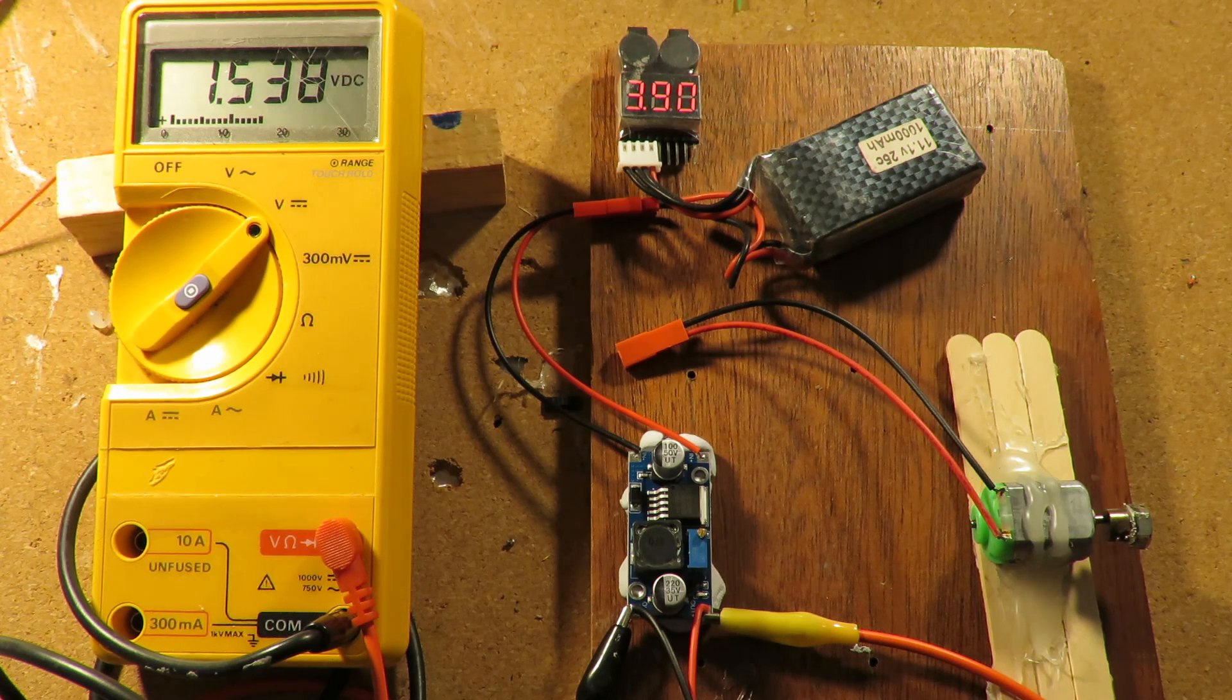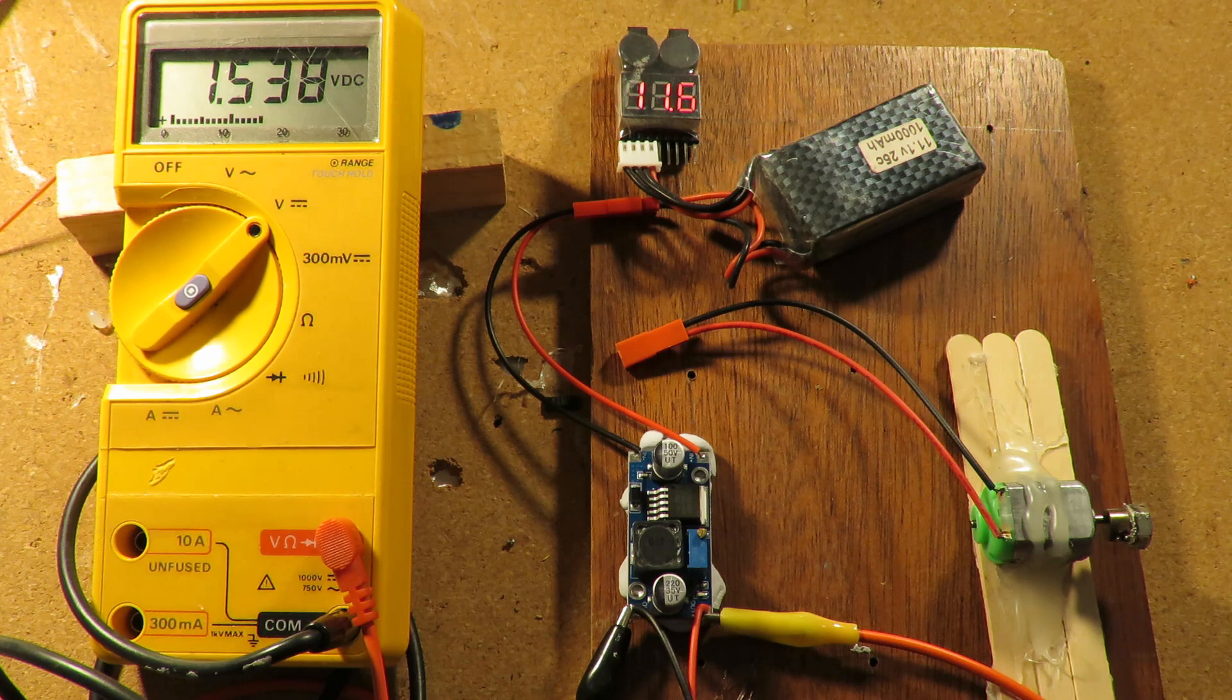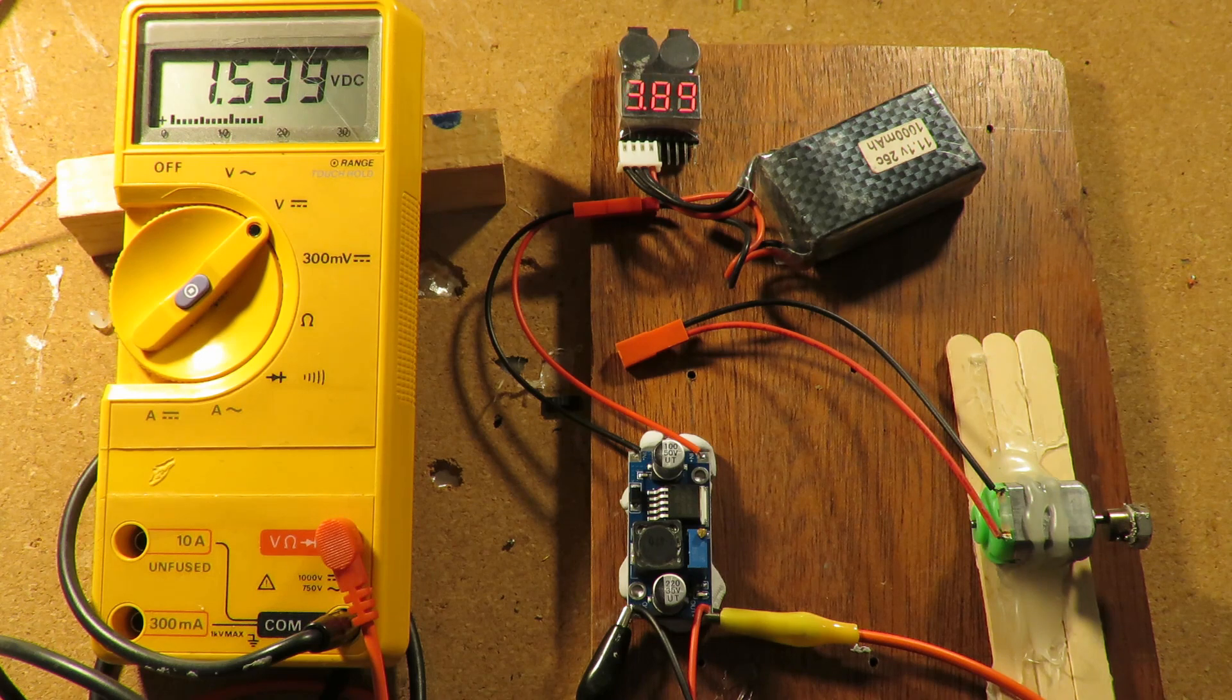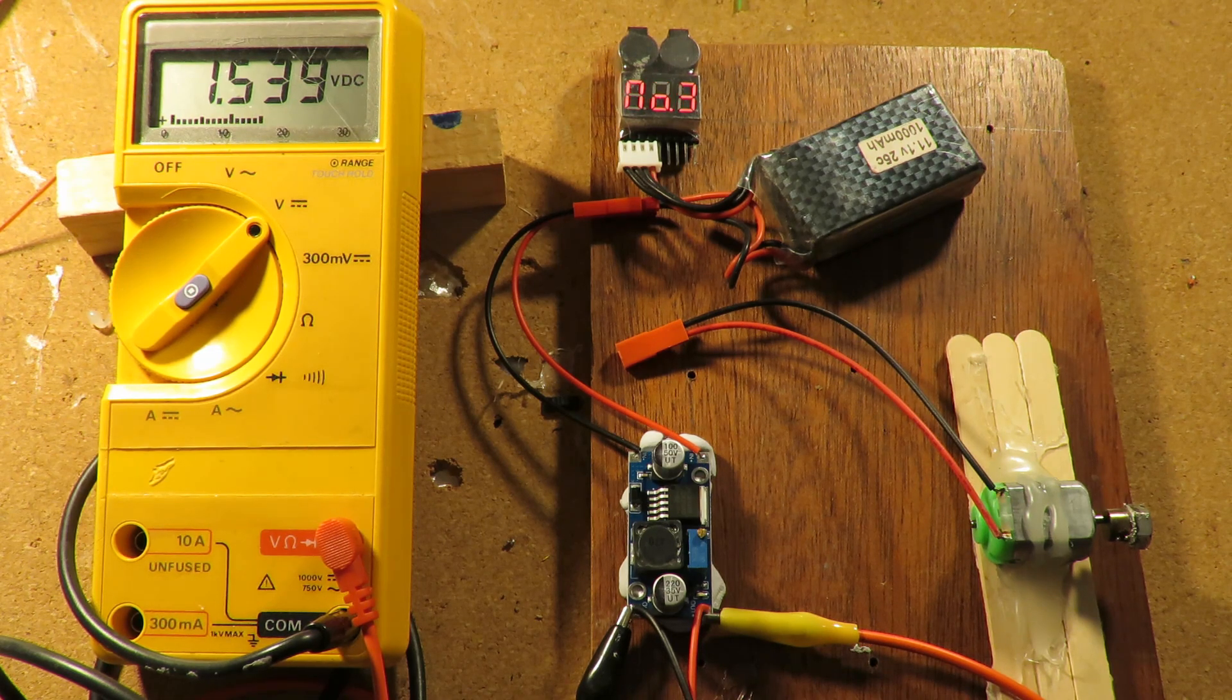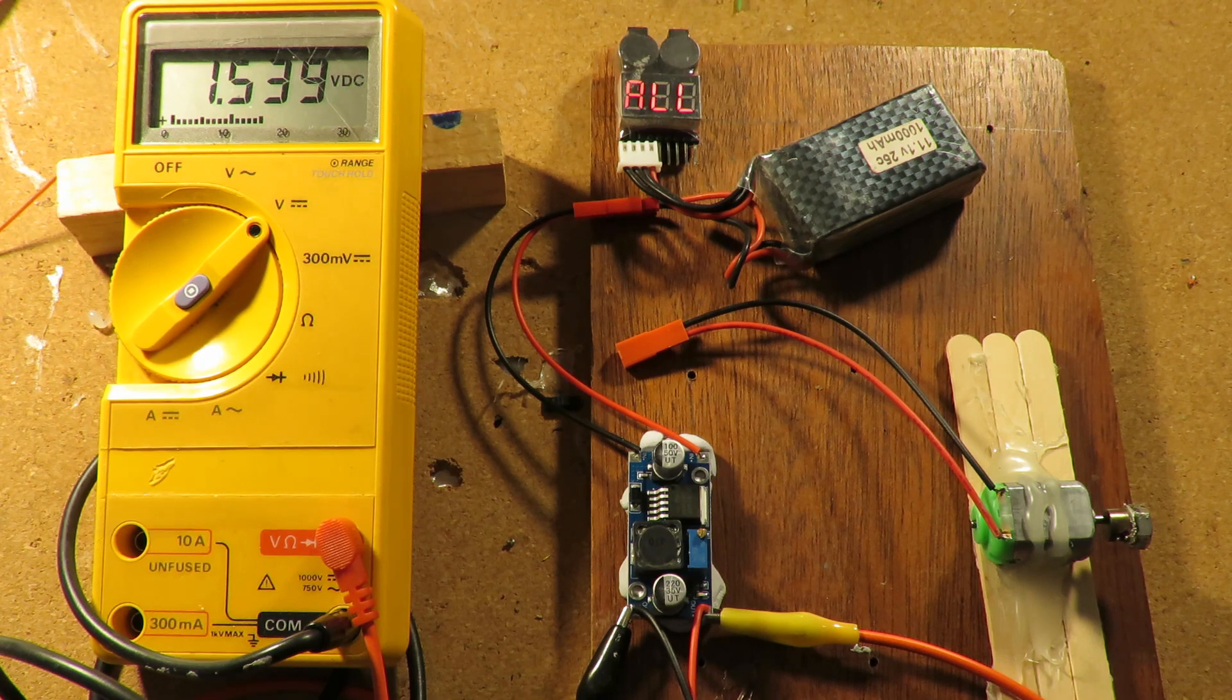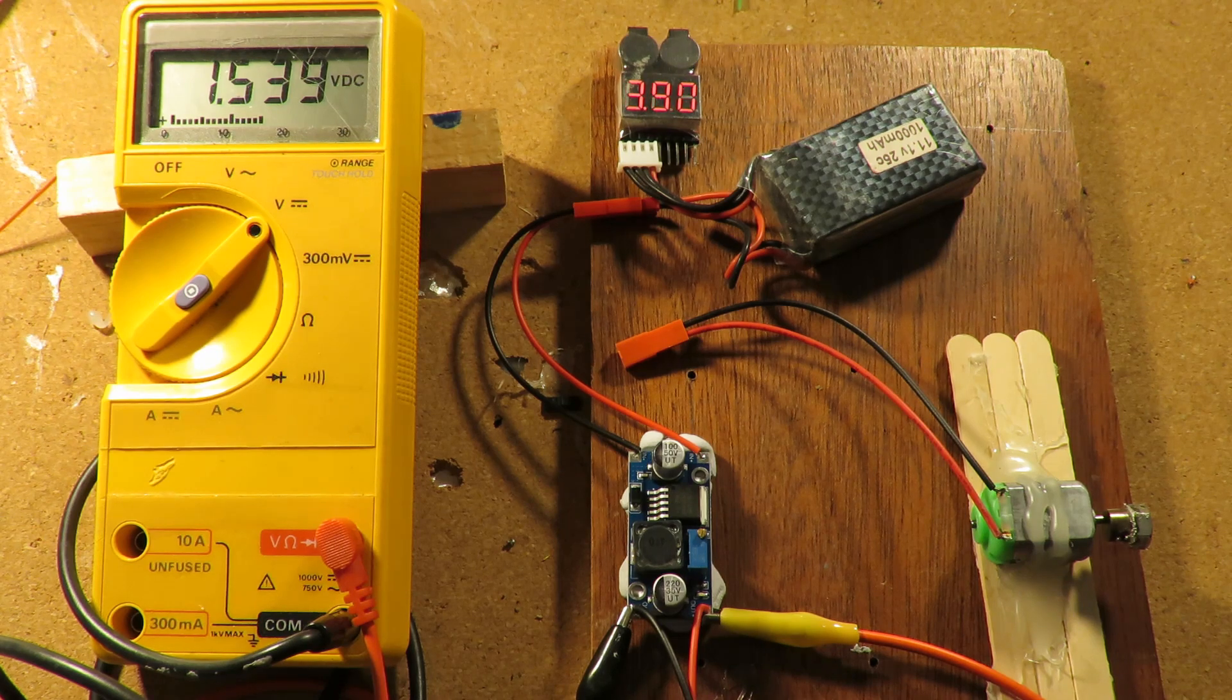So if your car has four double A batteries, it's expecting six volts unless it's rechargeable batteries, in which case it's only expecting 4.8 volts because rechargeable double A batteries are only 1.2 volts instead of 1.5 volts.